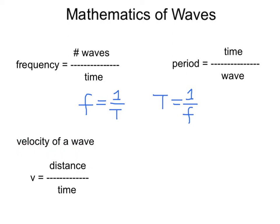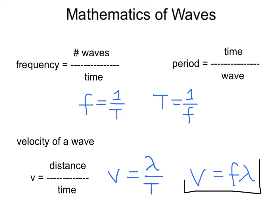We can calculate the velocity of a wave using velocity equals distance over time. We can also look at the characteristics of a wave: the distance one wave travels is called the wavelength, and the amount of time for one wave is called the period. So you could calculate the velocity of a wave by taking the wavelength divided by the period. We can also note that velocity equals frequency times wavelength — since one over the period is frequency, we get the wave equation: velocity equals frequency times wavelength. This will be the most often used way to determine the velocity of a wave.